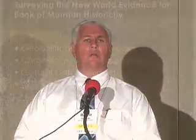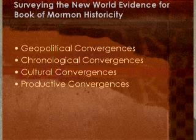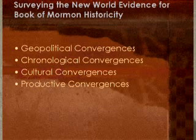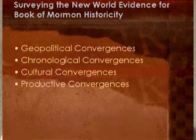Then there are cultural convergences. Once we establish the geopolitical and chronological framework, we need to look at the culture of the area and whether it converges with the descriptions we find in the Book of Mormon. And the last type — my favorite — is what I call a productive convergence, where understanding the context and the place where the Book of Mormon would have taken place actually teaches us something about the text that we would not understand otherwise. It becomes a way to elucidate the text, particularly in places where the text might be a little confusing or strange.